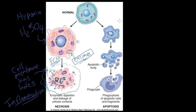Apoptosis, on the other hand, is more organized. Apoptosis is a programmed cell death.